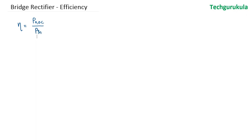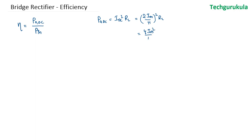The straightforward quantity is the output DC power, which is IDC squared times the load resistor. We know that IDC is 2Im over pi. So we have that whole squared times RL, which gives us 4Im squared over pi squared times RL.